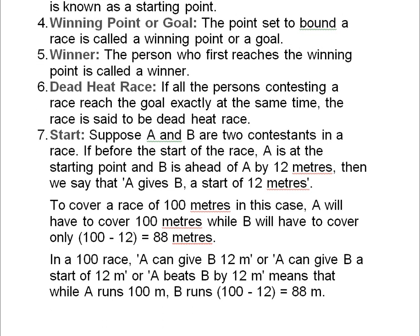Start: Suppose A and B are two contestants in a race. If before the start of the race B is ahead of A by 12 meters, then we say that A gives B a start of 12 meters. To cover a race of 100 meters in this case, A will have to cover 100 meters while B will have to cover only 88 meters (100 minus 12). So in a 100-meter race, A can give B a start of 12 meters, or A beats B by 12 meters, meaning A runs 100 meters while B runs 88 meters.